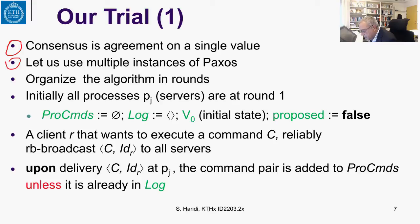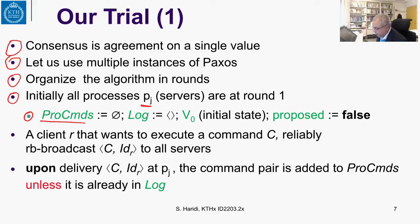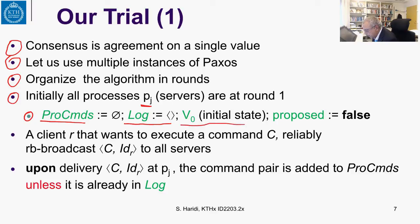Let us use multiple instances of Paxos and organize the algorithm in rounds. Initially, all processes — for example process pj — are at round one. Each process has local state variables: proposed_command is a set initially empty, representing commands from clients to propose; log is an empty sequence representing the sequence of commands agreed upon; and each replica has initial state v0. Initially, no commands have been proposed.